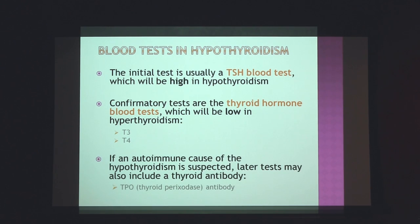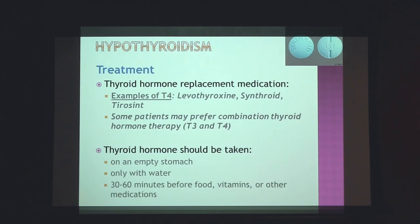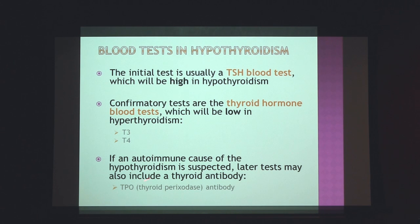Remember that the most common cause of hypothyroidism in the world is Hashimoto's disease — that autoimmune disease in which antibodies are present in the bloodstream. If that's suspected, we can check for those antibodies. The TPO antibody titer can be checked and measured.